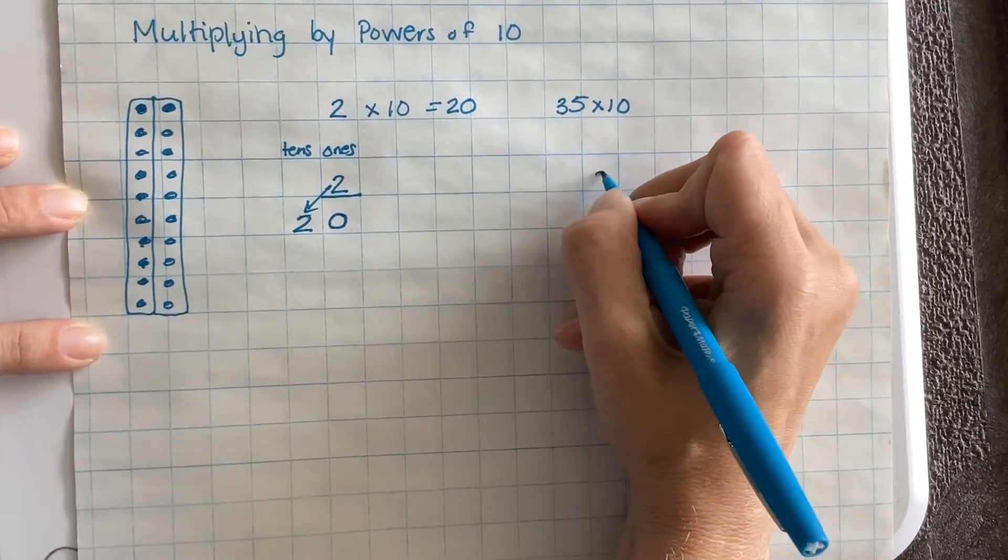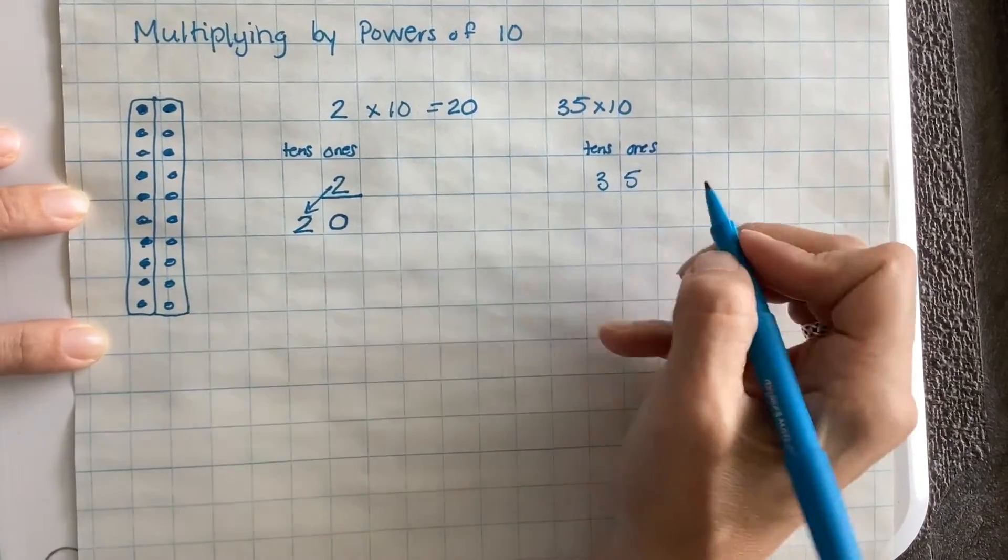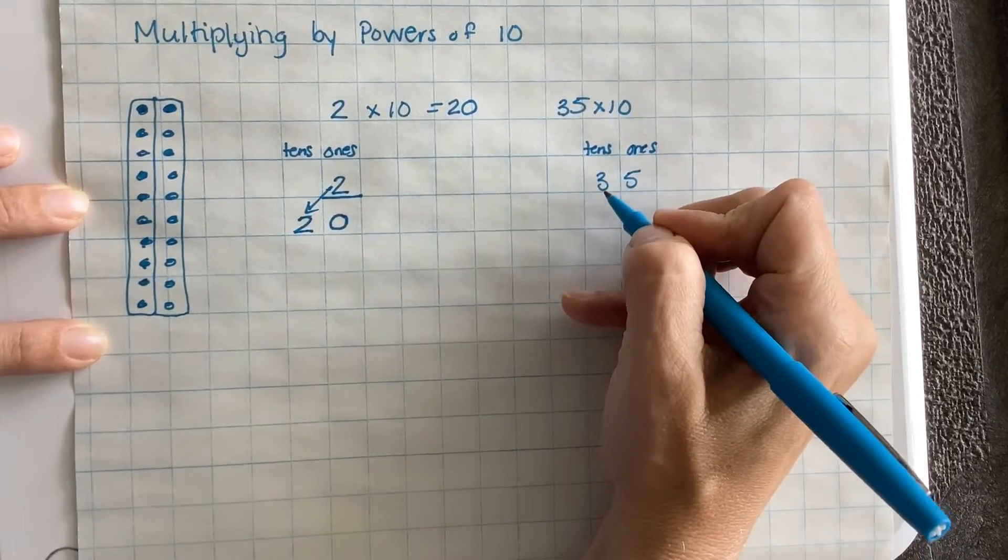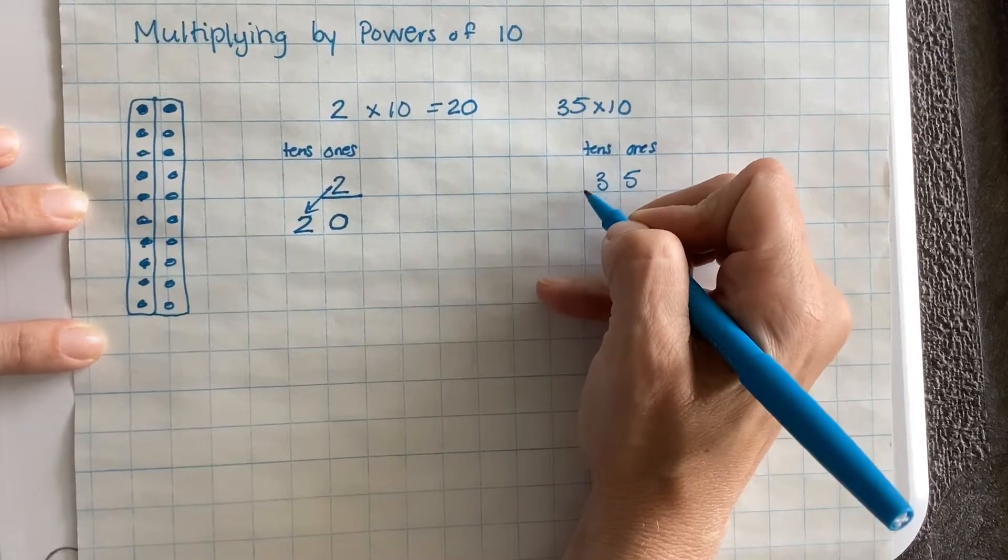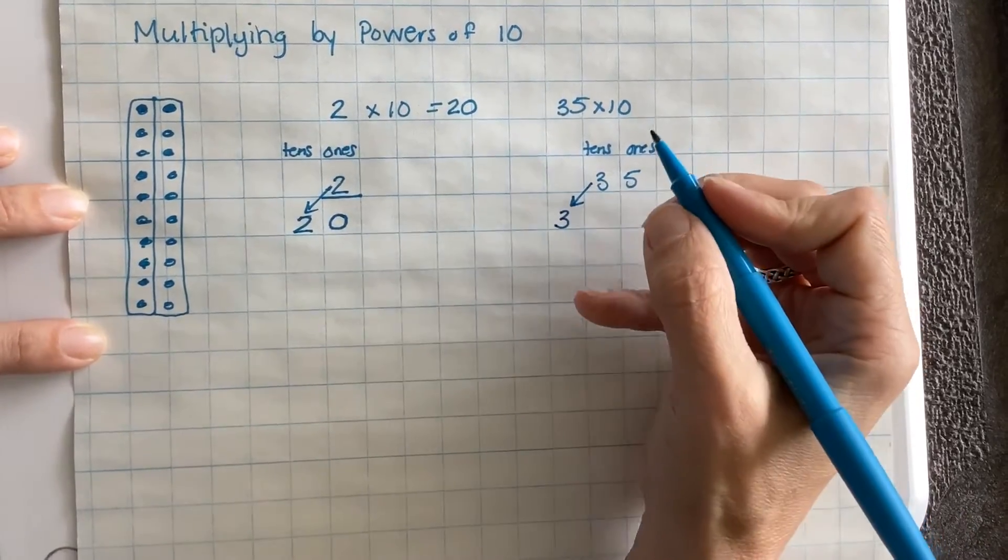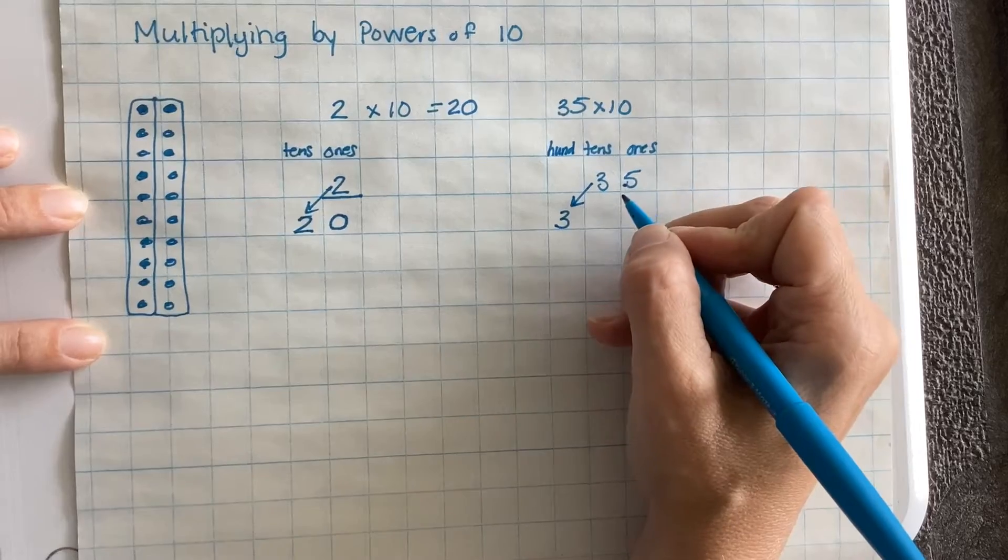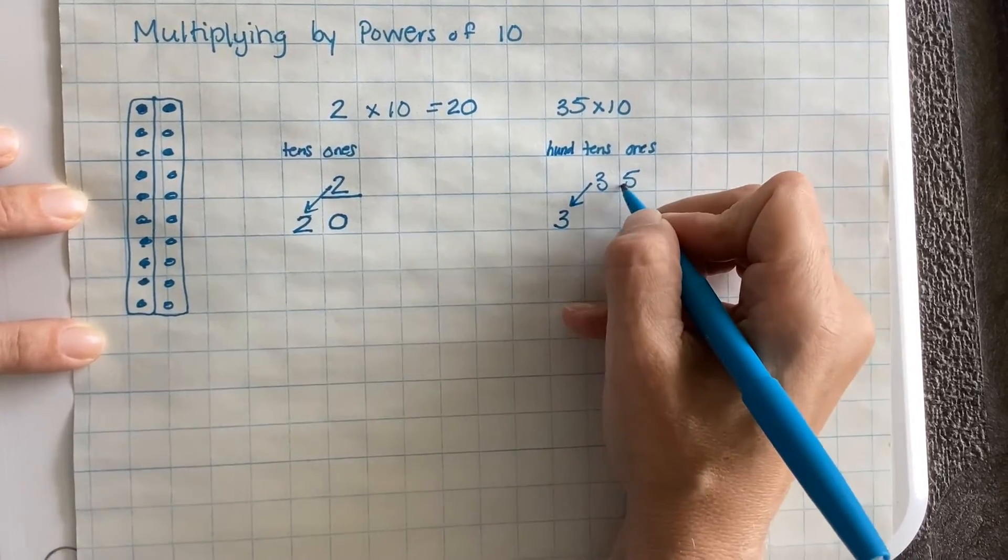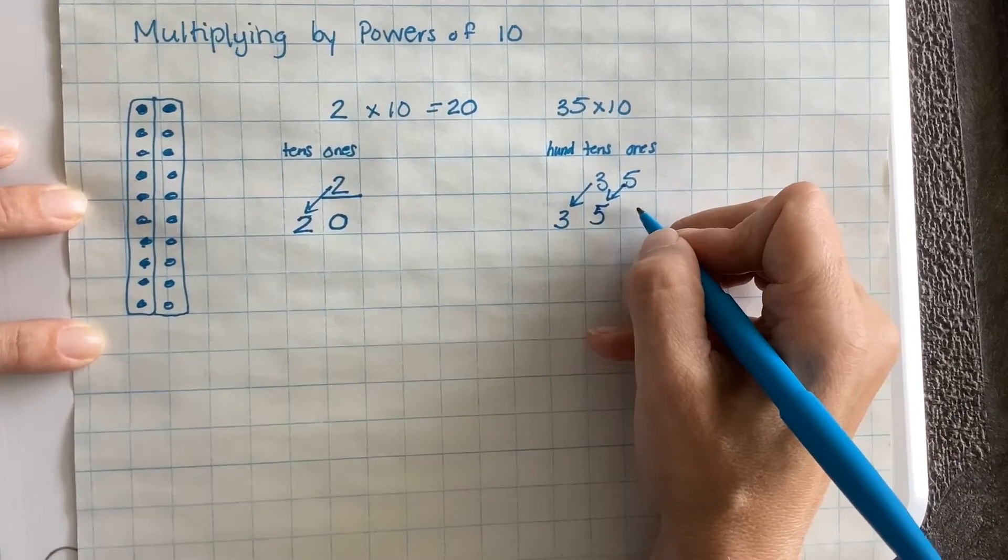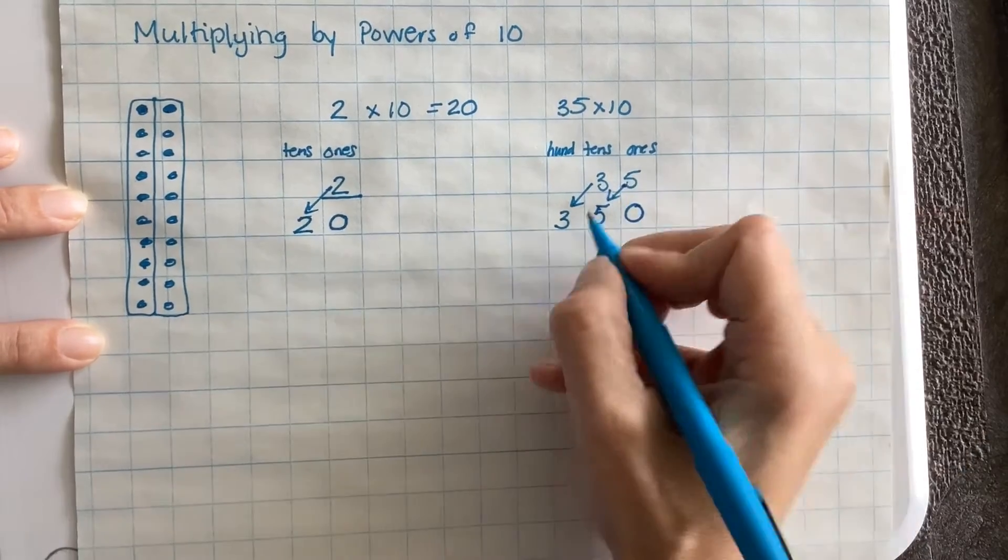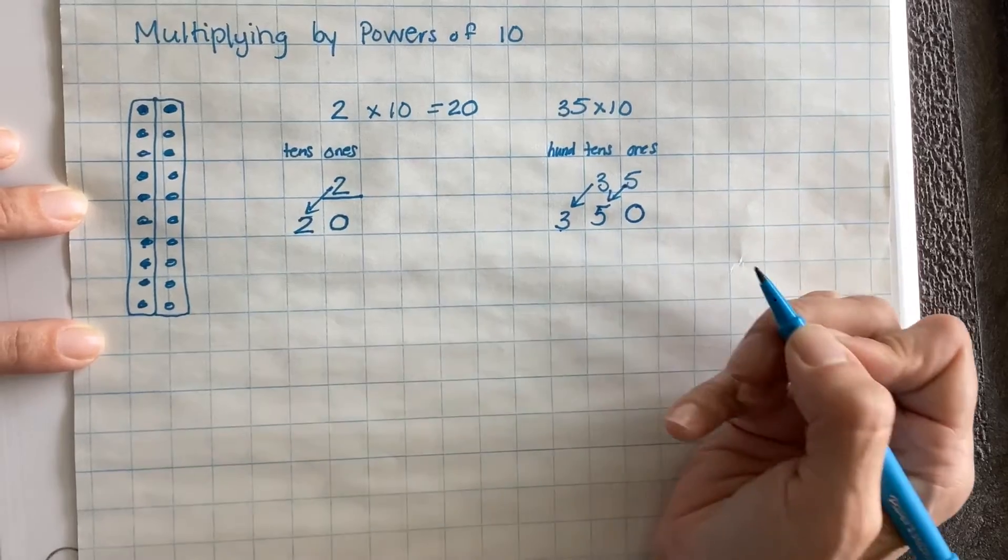So if I start out with 35, these are the 10s and these are the 1s. And I multiply by 10. If I take 3 tens and I take 10 groups of 3 tens, that means I now have 3 in the 100s column. And the 5, I used to have 5 ones, but now I have 10 times 5 ones. So I have a 5 in the 10s column, which means 50. And now I have to put a 0 here at the end to show that this is 100s and this is 10s and this is 1s. If I didn't put the 0 on, it would just look like 35 all over again.